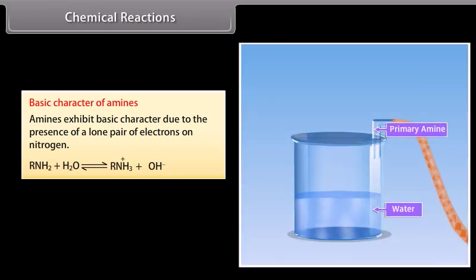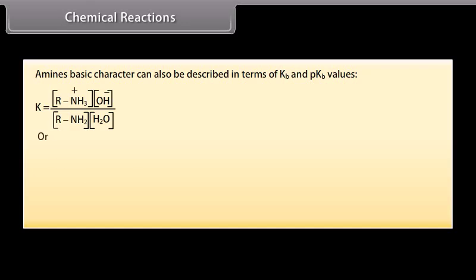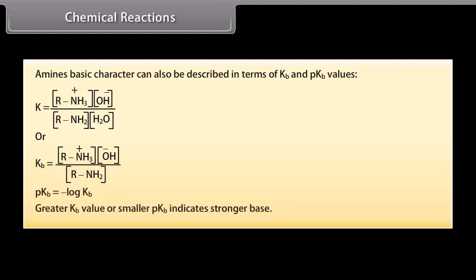Amines exhibit basic character due to the lone pair of electrons on nitrogen. They are stronger bases than water and are therefore protonated by water in aqueous solutions. Amine basicity can be described in terms of Kb and pKb values. Greater Kb value or smaller pKb indicates a stronger base.